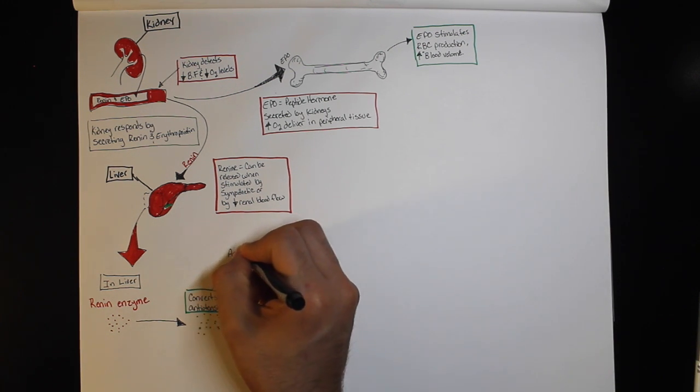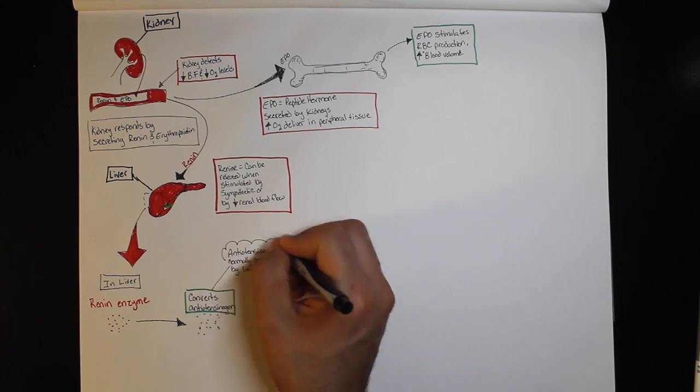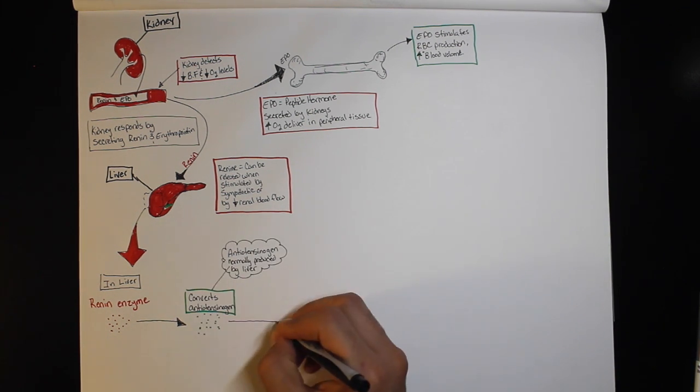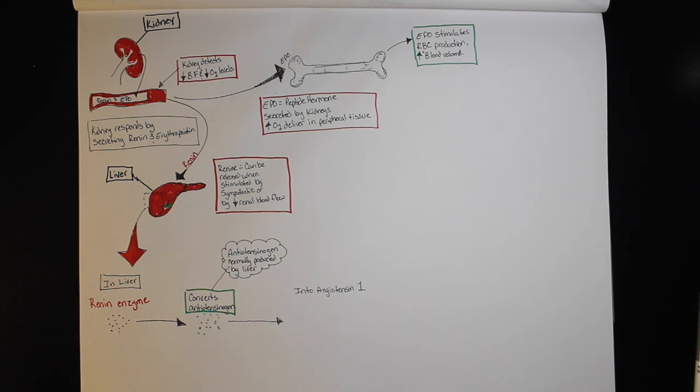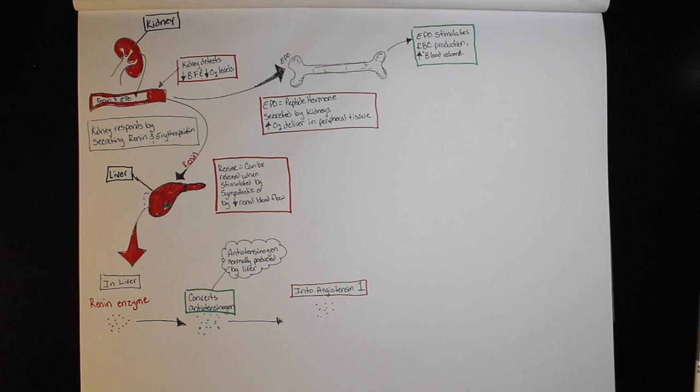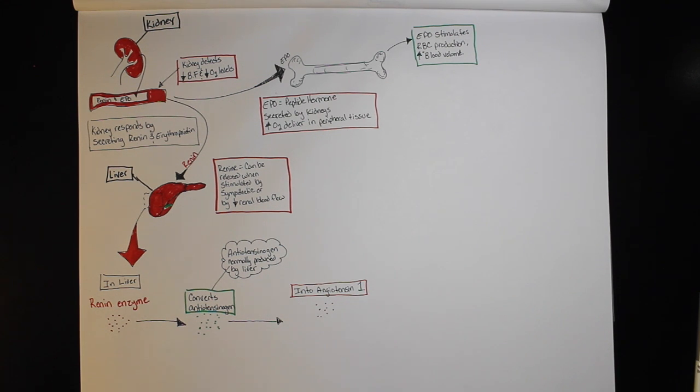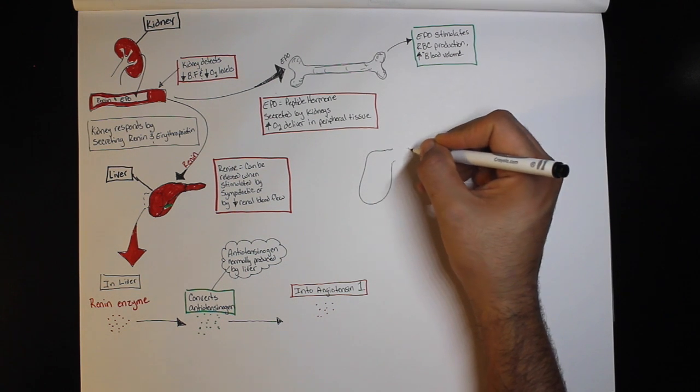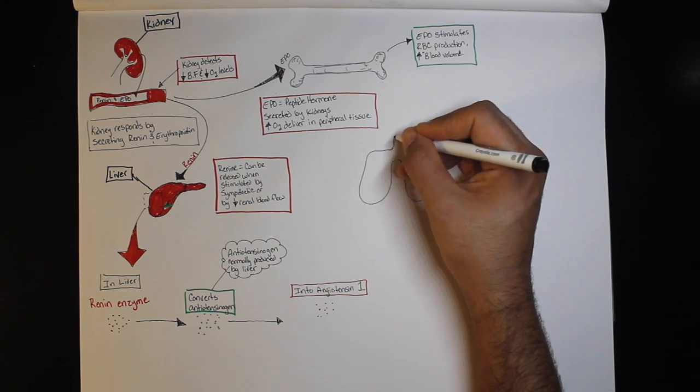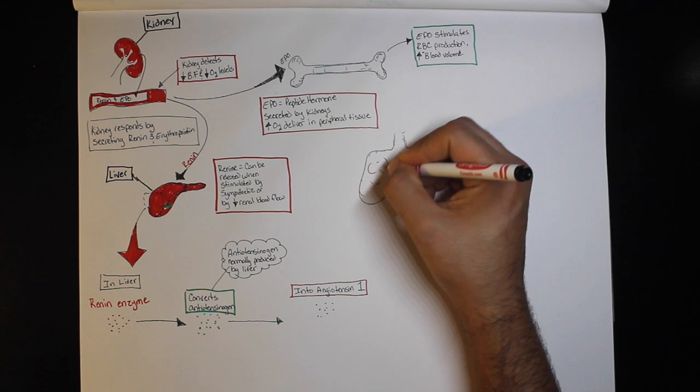Angiotensin 1 is converted to angiotensin 2 by an enzyme called angiotensin converting enzyme, also known as ACE. ACE has two primary functions: converting angiotensin 1 into angiotensin 2 and degrading bradykinins and other vasoactive peptides.